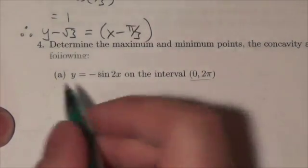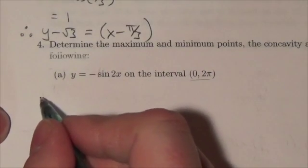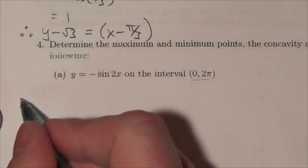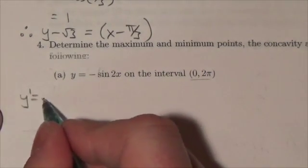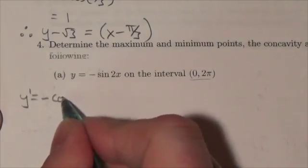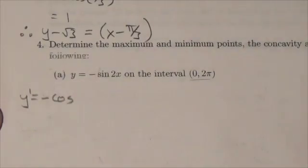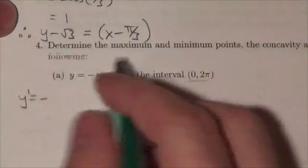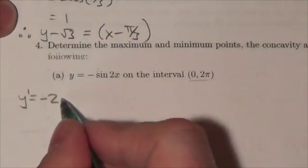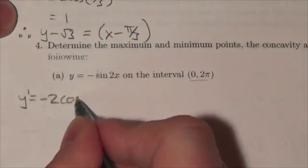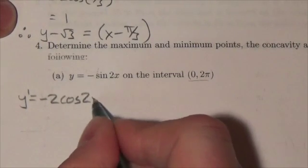So the first thing we're going to do, obviously, is take the derivative — it's a calculus question. So y prime is going to equal negative cosine... and I know where this is going at the end here. I'm going to end up multiplying by the derivative of the 2x, which will put a 2 in front. So this will be negative 2 cosine of 2x.